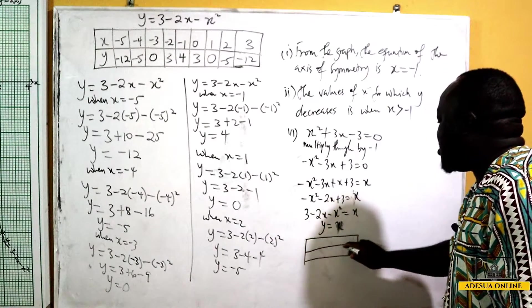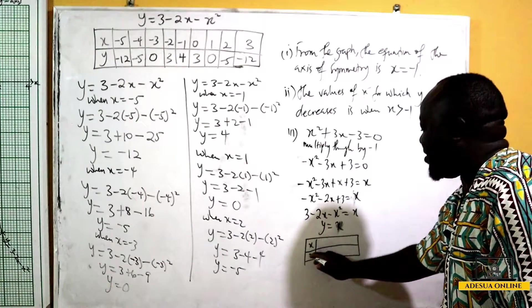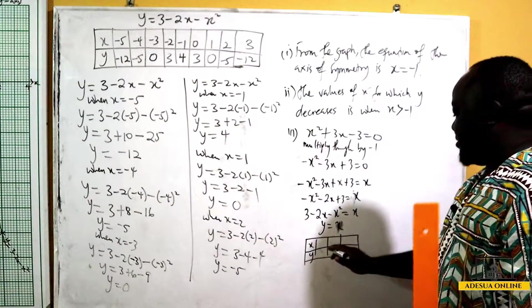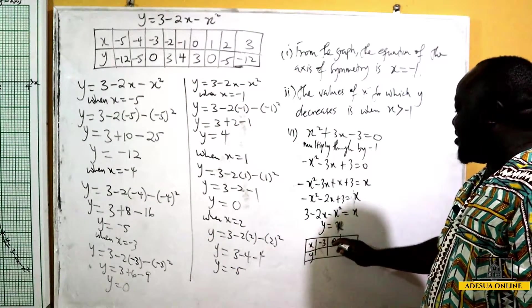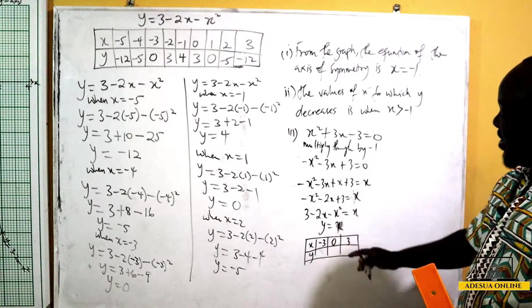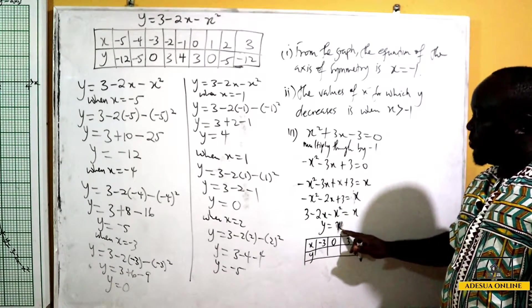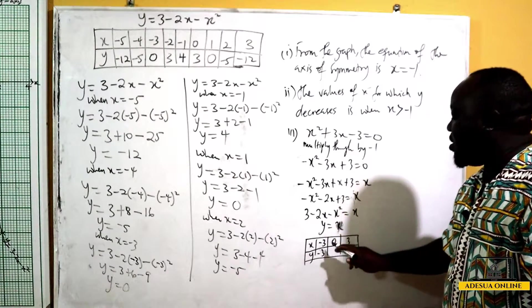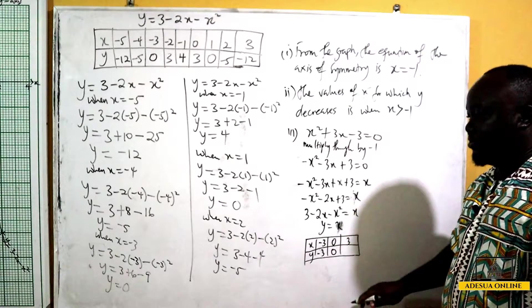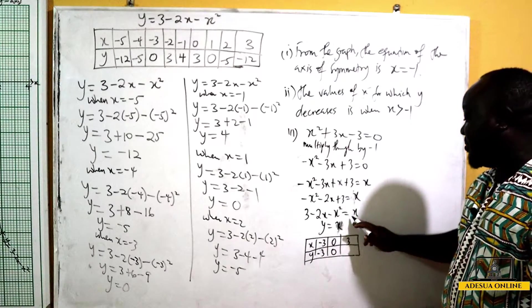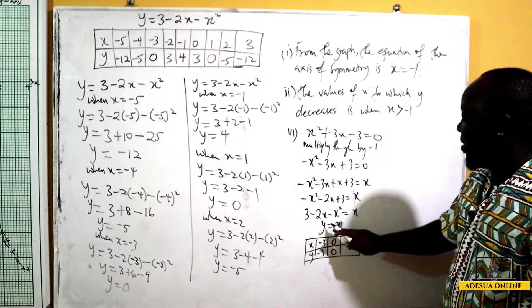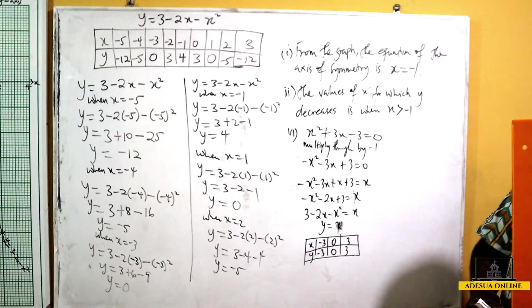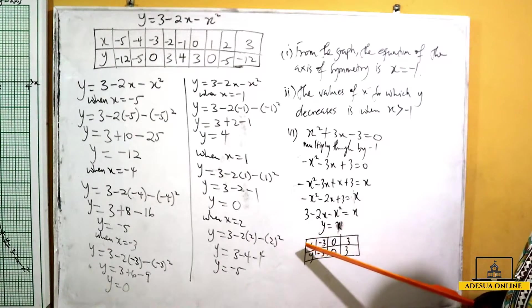Since y equals x is a straight line, we pick two or three values of x from our range and make a table. When x is negative 3, y is negative 3. When x is 0, y is 0. When x is 3, y is 3. Now we go to the graph and plot these three points to draw the straight line.